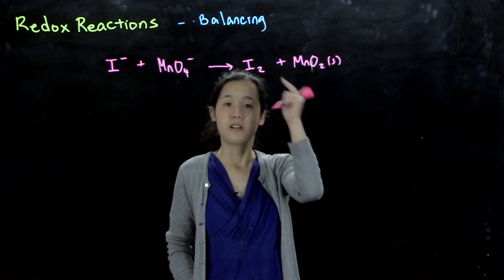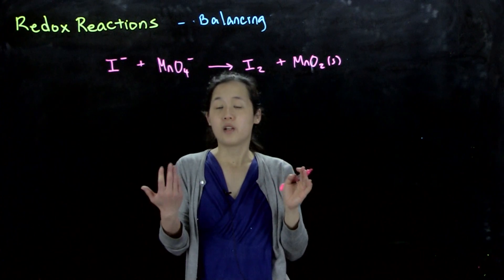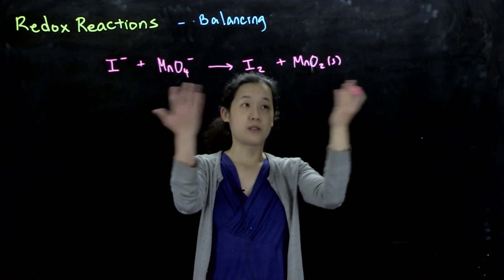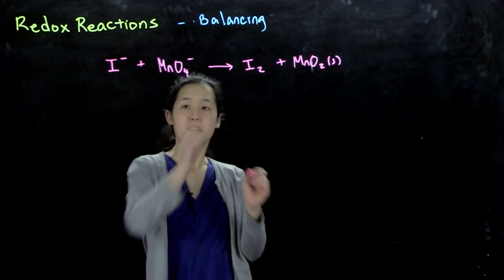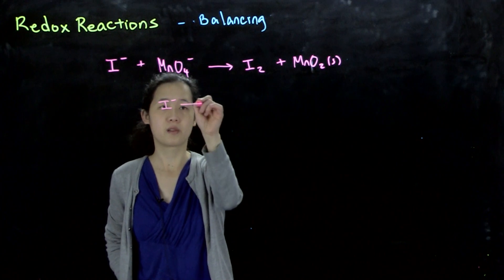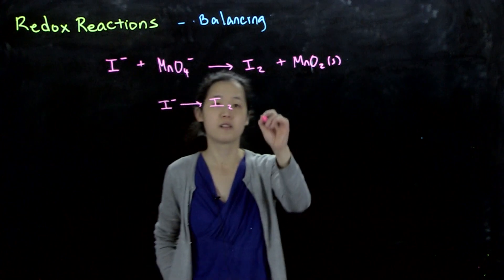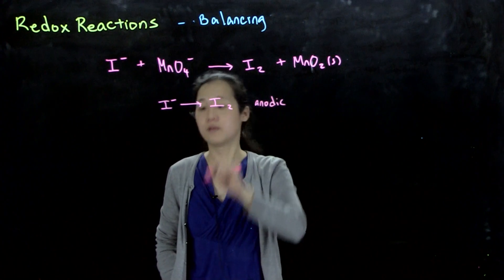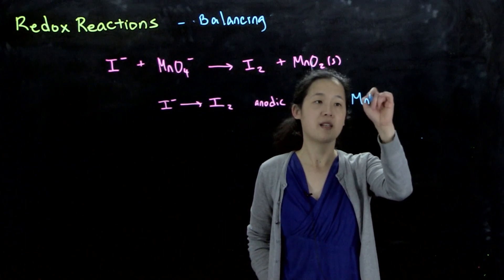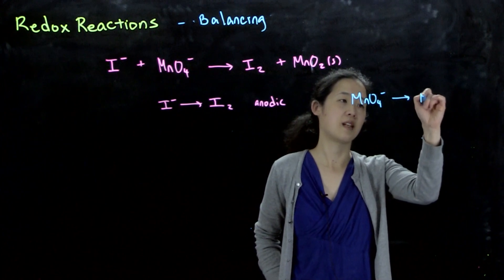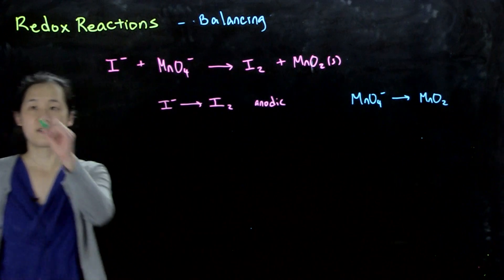These are aqueous, aqueous, solid, solid. What we want to do first is identify what our half-reactions are. For this one, iodide is going to I₂. This is not balanced. This is our anodic reaction. And then our cathodic reaction will be the reduction, so permanganate is getting reduced to manganese oxide. These are our half-reactions. Step zero.